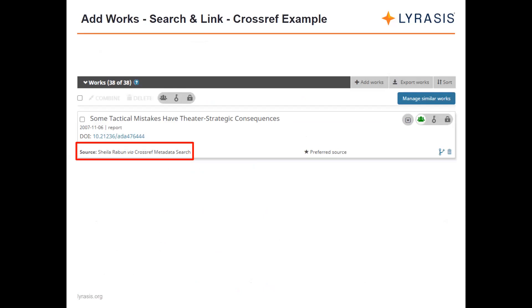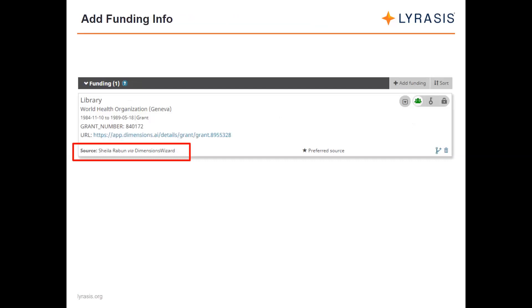There are tools and tips that can be helpful to researchers — through the ORCID US community, resources include video tutorials, written tutorials, and email templates to help get the word out that these tools are available. For the funding section, the Dimensions wizard works the same way as Crossref — it's a database where the researcher can search for their past funding based on their name, grant title, or keywords and have that information added to their ORCID record without having to type it all themselves.